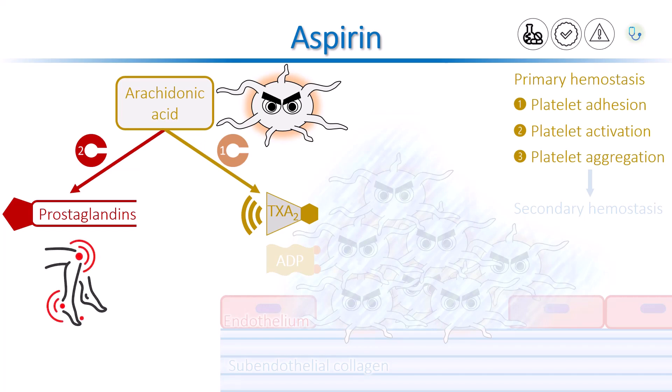What aspirin does is it blocks the cyclooxygenase enzymes non-selectively and irreversibly. But the inhibitory effect is more pronounced on COX-1 than COX-2. We only need a small amount of aspirin to produce an inhibitory effect on COX-1 enzyme, whereas a large dose of aspirin is required to block COX-2 enzyme.